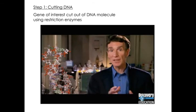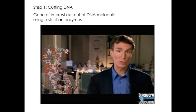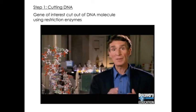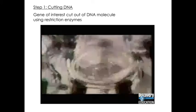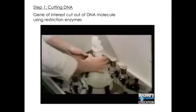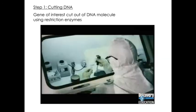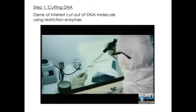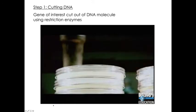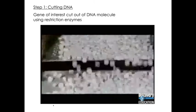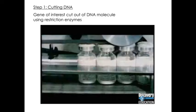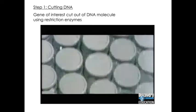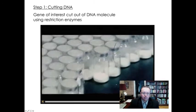Since Hamilton Smith's discovery, hundreds of restriction enzymes have been identified, and scientists are using recombinant DNA for a world of applications we depend on — everything from the creation of more effective, less expensive drugs to the production of human insulin for the millions of diabetics worldwide who rely on getting their daily dose.